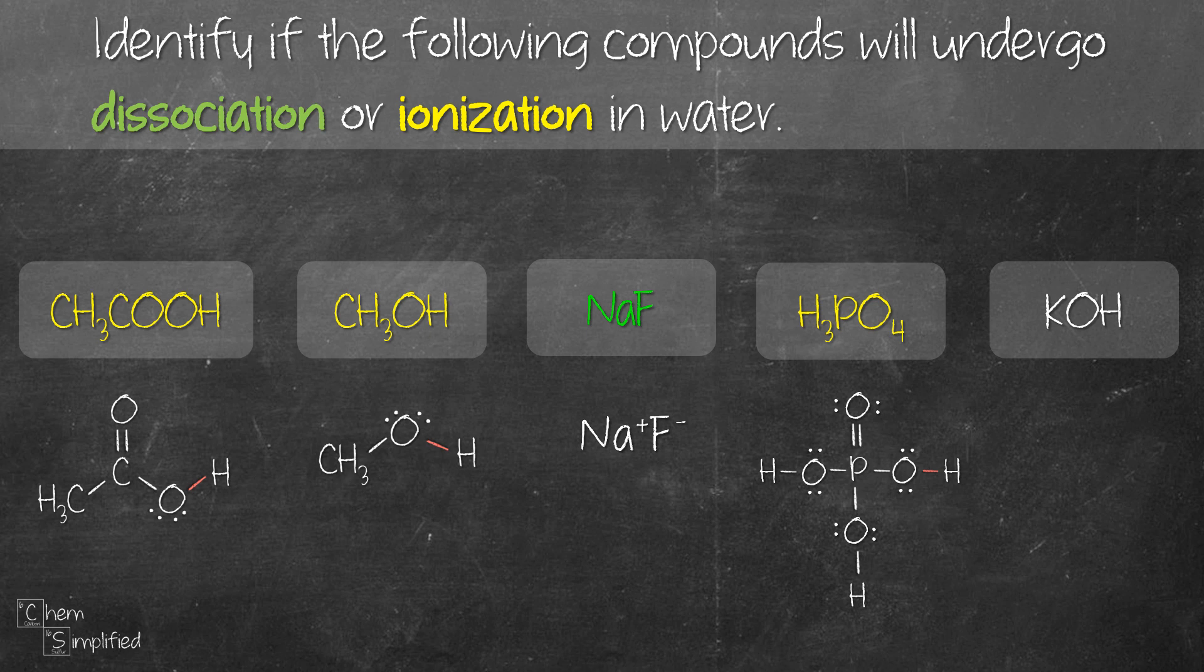Lastly, KOH is an ionic compound consisting of K+ and OH-. We know it's an ionic compound because it's made out of a metal ion, which is K+, and a polyatomic anion, which is the hydroxide ion. That means KOH will dissociate into the existing ions, which are K+ and OH-.